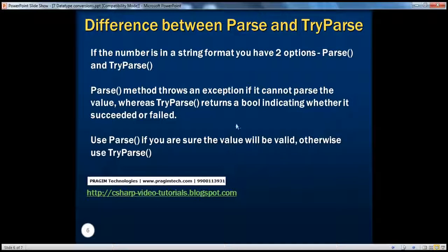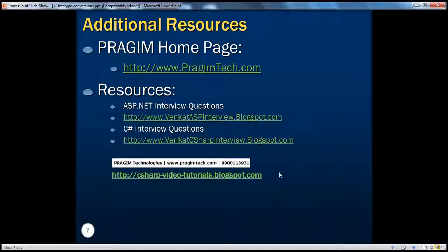So that's basically the difference between parse and try parse. If the number is in a string format, you have two options: parse and try parse. Parse method throws an exception if it cannot parse the value, whereas TryParse returns a boolean indicating whether it succeeded or failed — true for success, false for failure — but it doesn't throw an exception. In general, use parse if you are sure that the value will be valid and there's not going to be any exception. Otherwise, use try parse in case of any doubt. That's it for today. Thank you for watching. Have a great day.